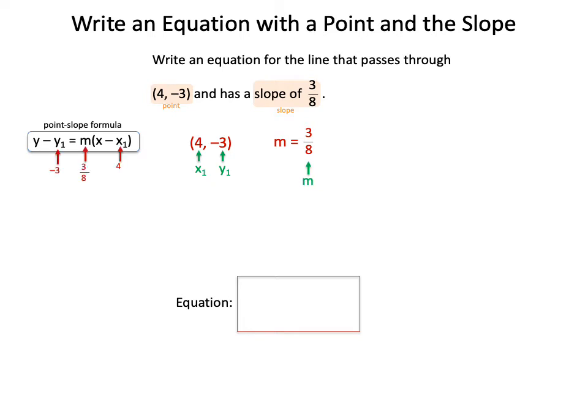Notice that the -3 will get plugged in first, and then the 3/8, and then the 4. When you plug in a negative value, make sure that you honor the subtraction in the formula and the negative that you plug in. So the first part of this is going to be y minus negative 3 equals, and then your 3/8 for your slope, and then the quantity x minus 4. Since you plug in a positive 4, you don't have to worry about that at the end there.